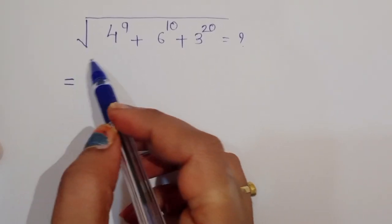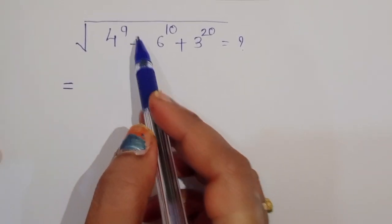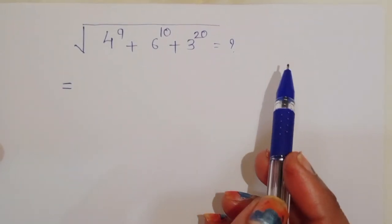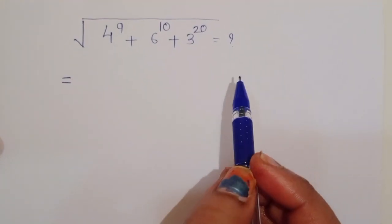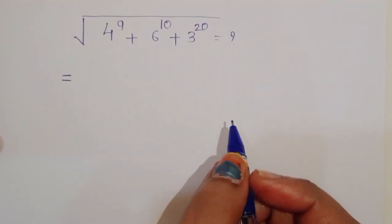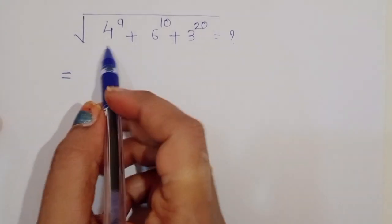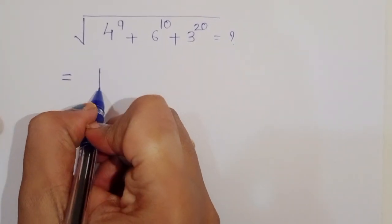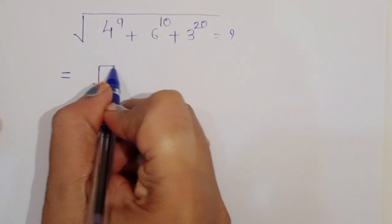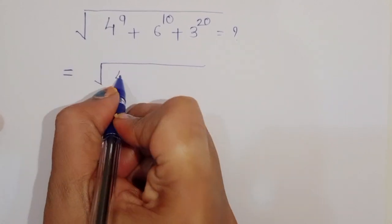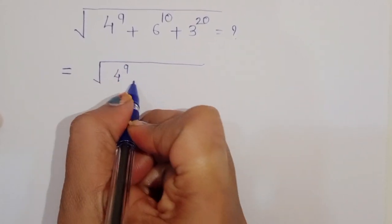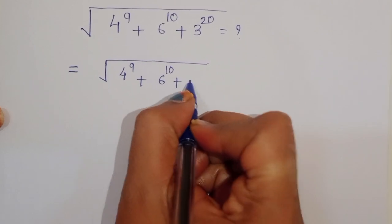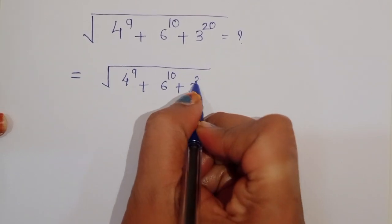The question is given: square root of 4 power 9 plus 6 power 10 plus 3 power 20 is equal to what? Let's see how we can solve this type of question. First, we write the given expression: 4 power 9 plus 6 power 10 plus 3 power 20.